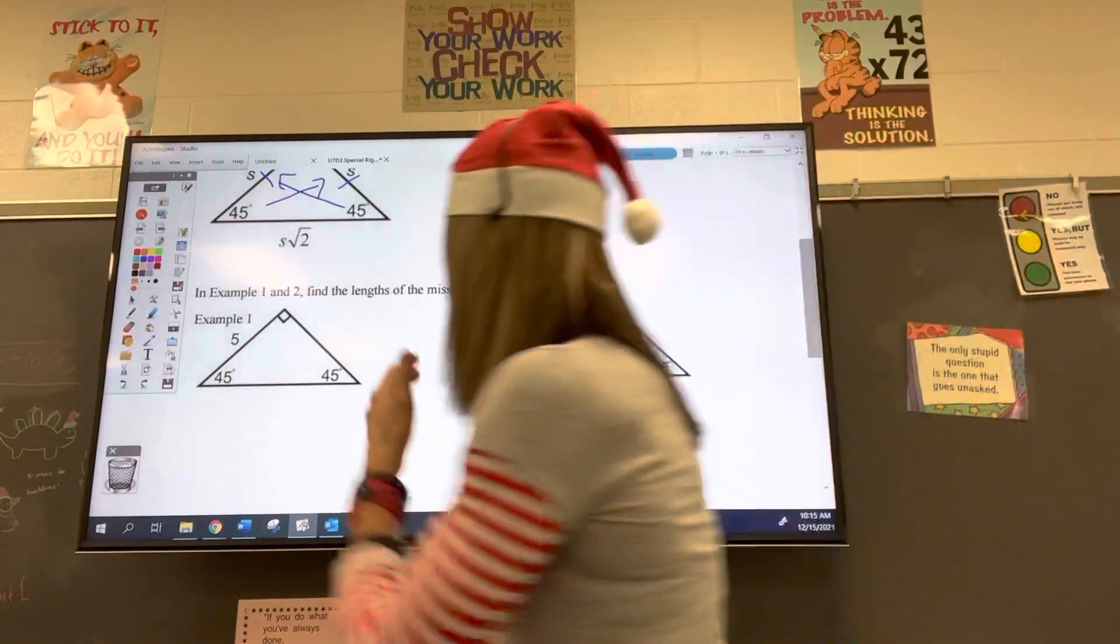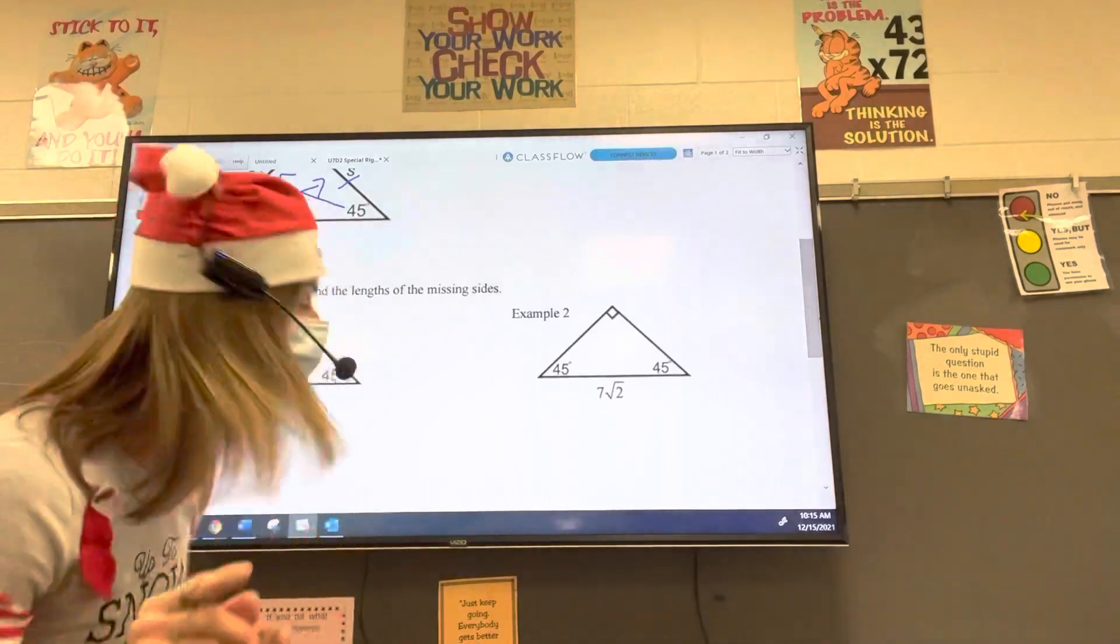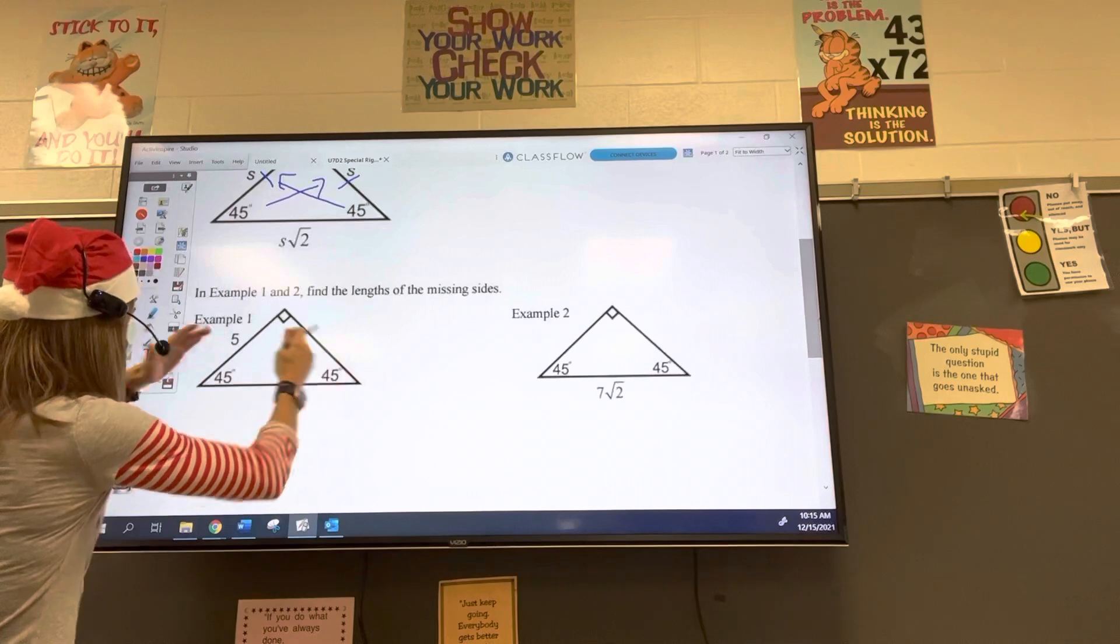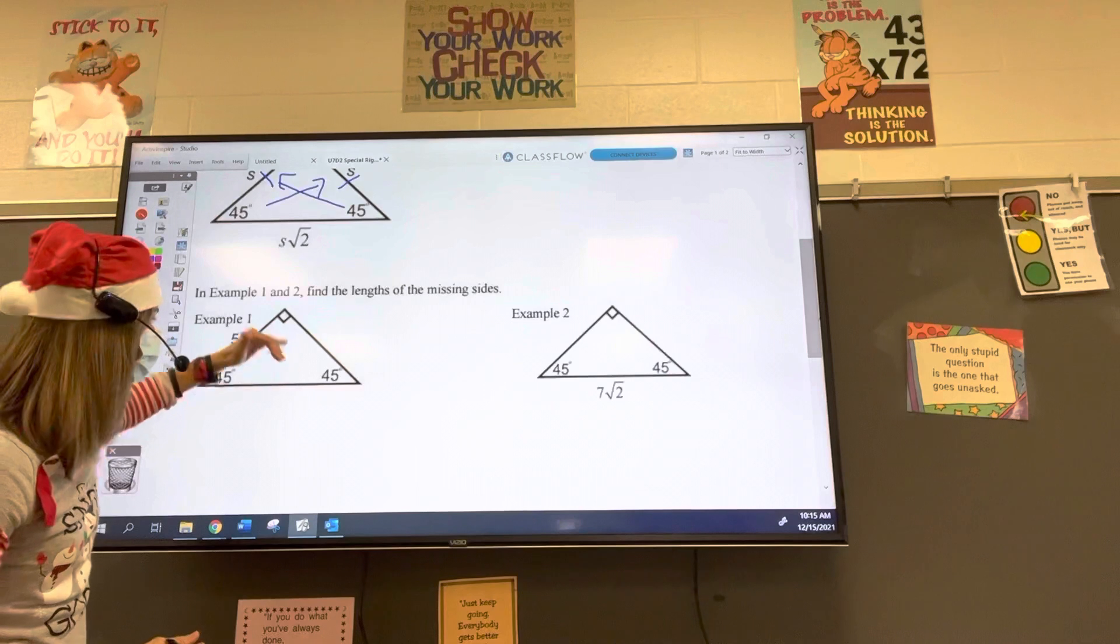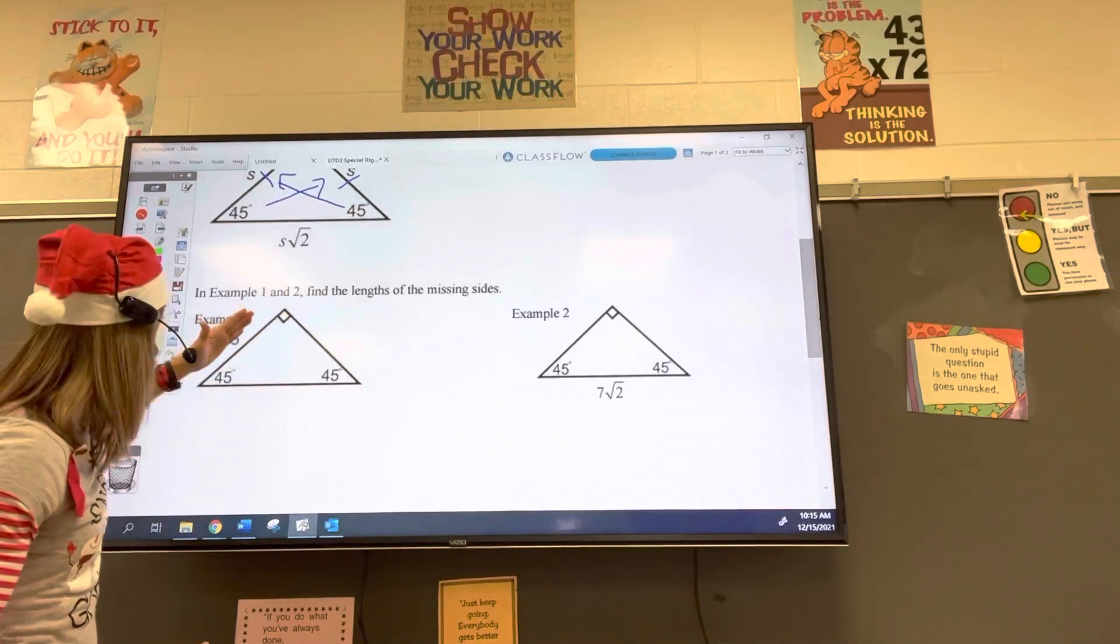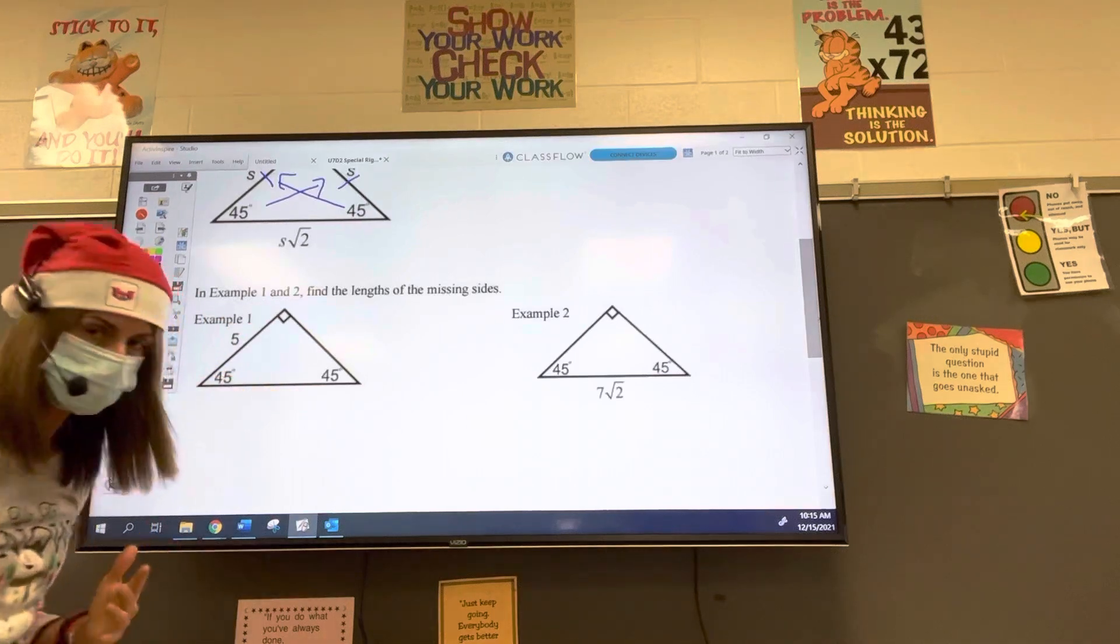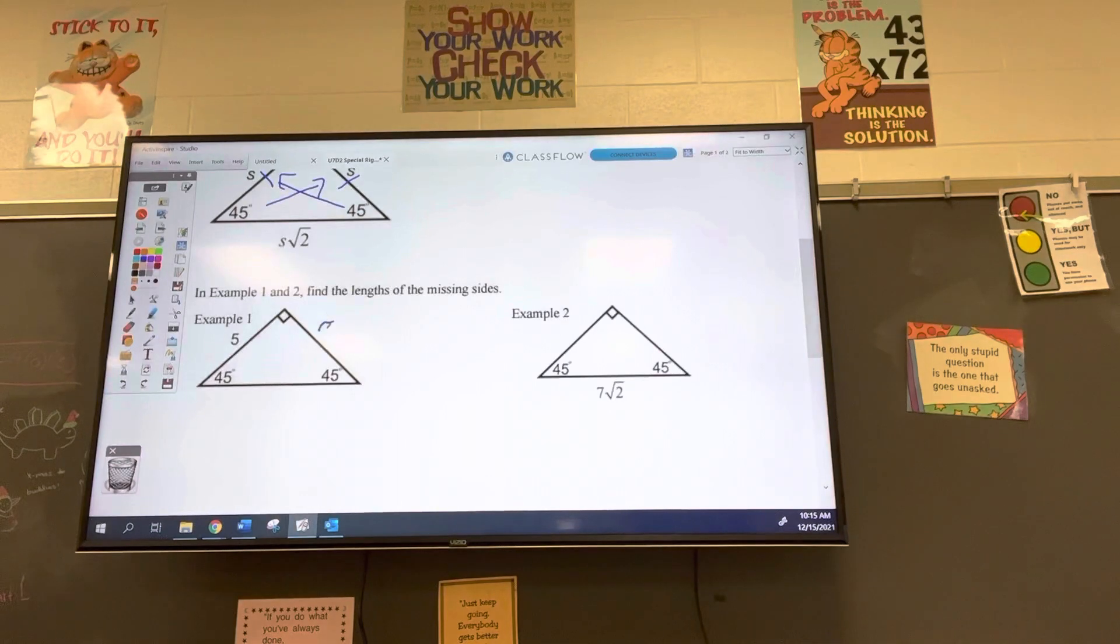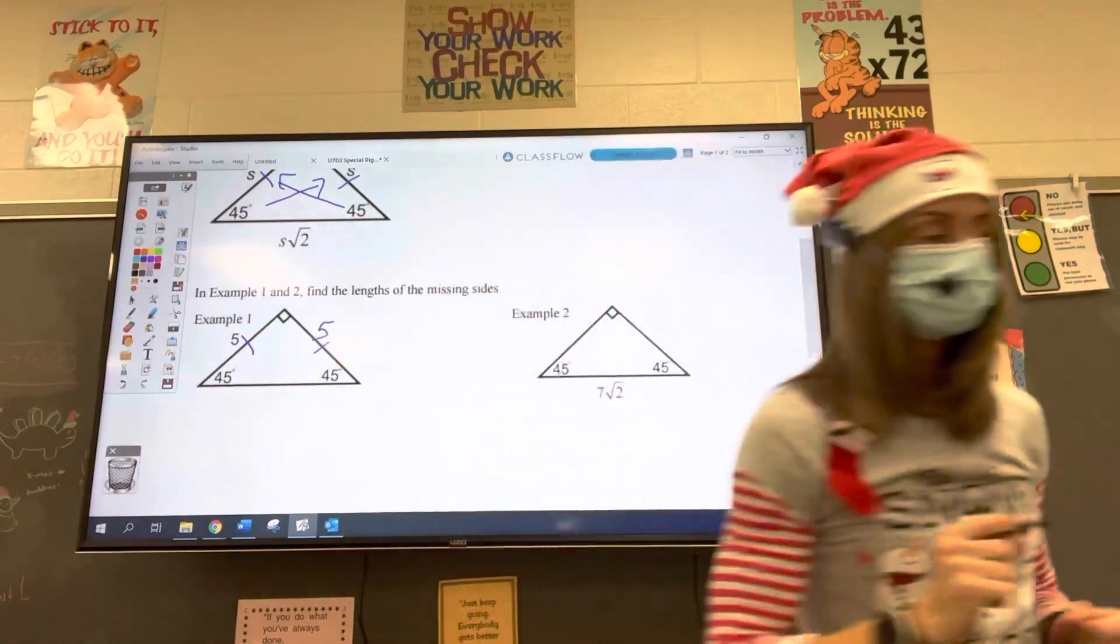Example number one. So we've got a 45-45-90 triangle. So that means it's special. We've got this relationship. The relationship between the lengths of the sides, which are the legs, and the hypotenuse, which we know this is the hypotenuse because it's across from the right angle, is times square of two. The length of the leg times square root of two. So I can just fill those values in. The other leg is the same length. Right? The legs are the same length, so those are both fives. And the hypotenuse is five root two.